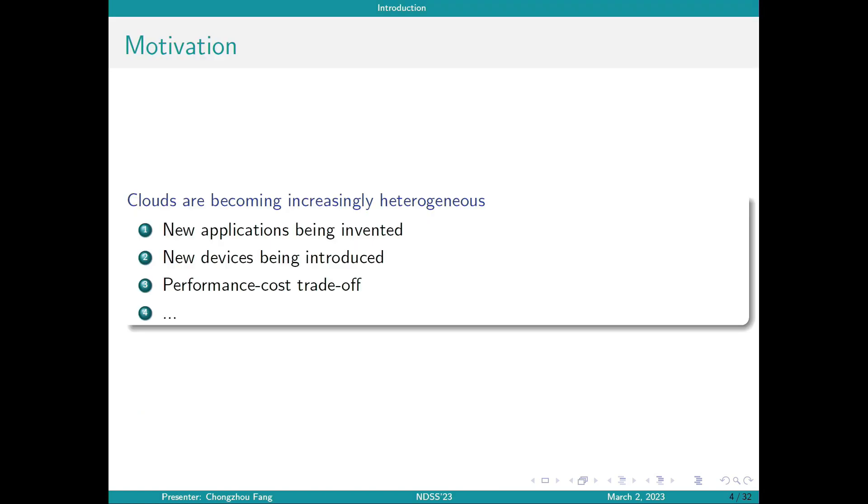So nowadays our cloud systems are becoming more and more heterogeneous. On the one hand, emerging new applications stimulate the need for heterogeneous architectures. On the other hand, the trend of introducing hardware like GPUs and FPGAs in the recent decade also increases heterogeneity. Besides, for performance cost trade-off considerations, cloud providers also offer diversified options for users to choose where the instance should be placed.